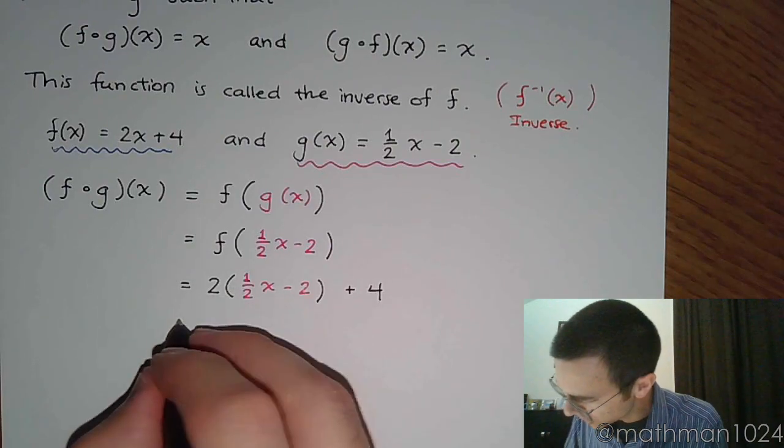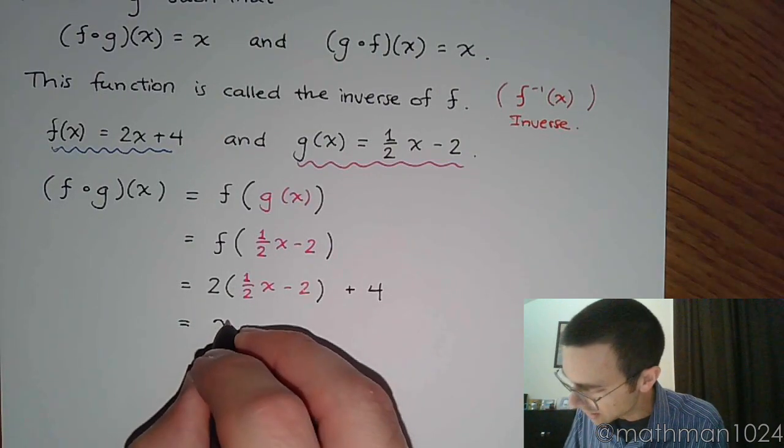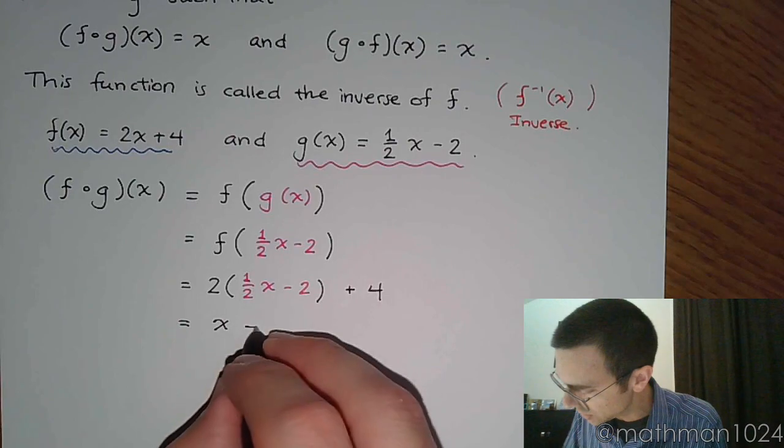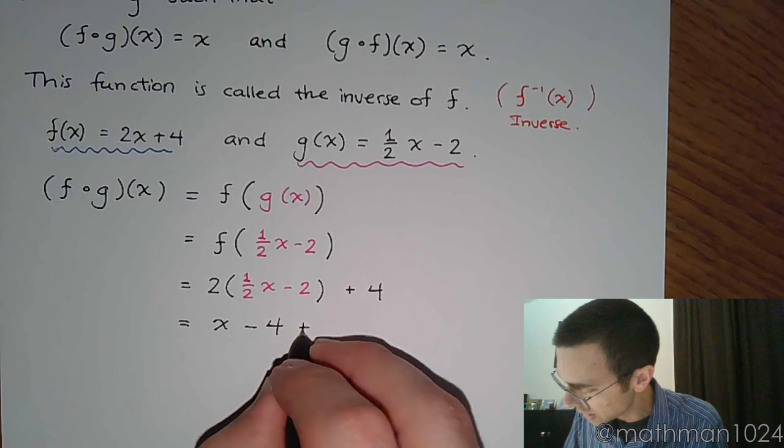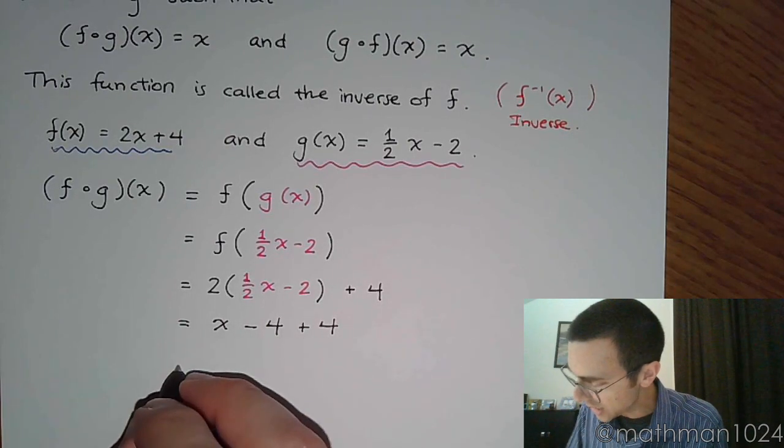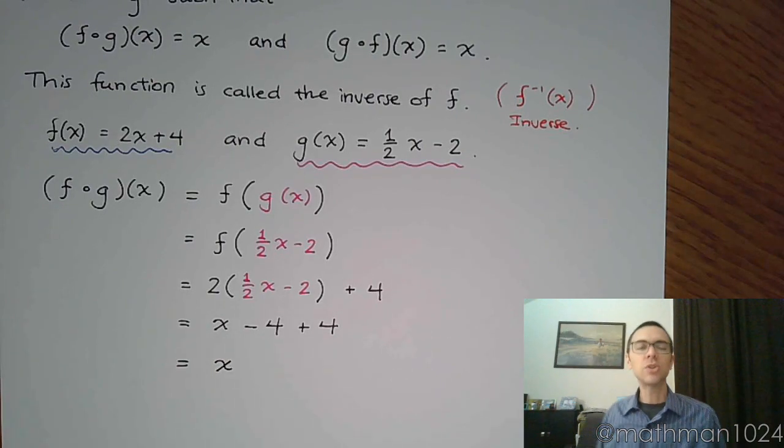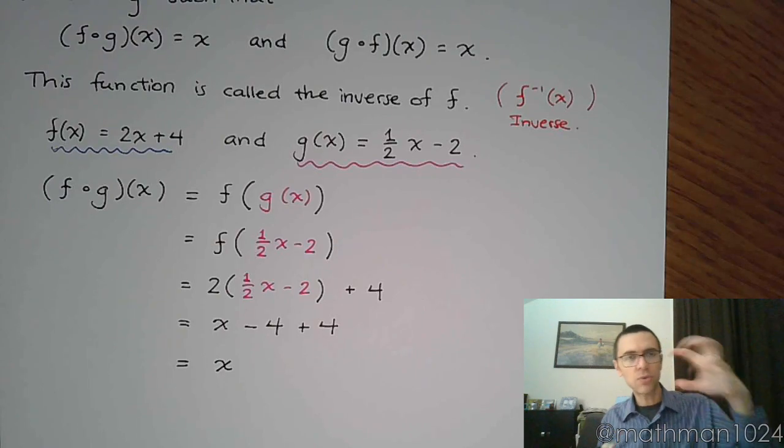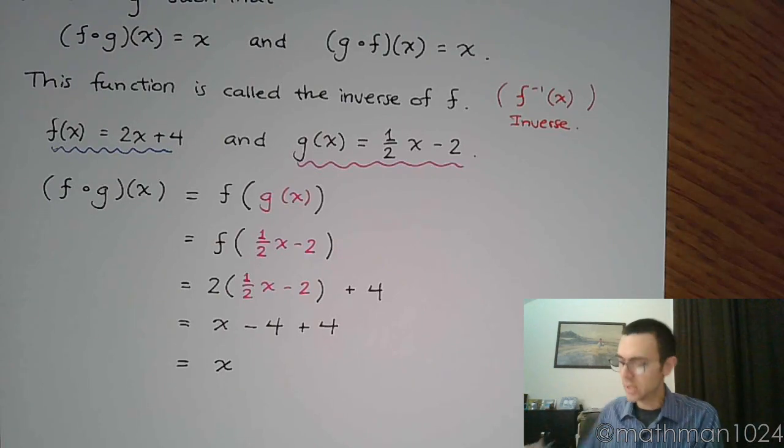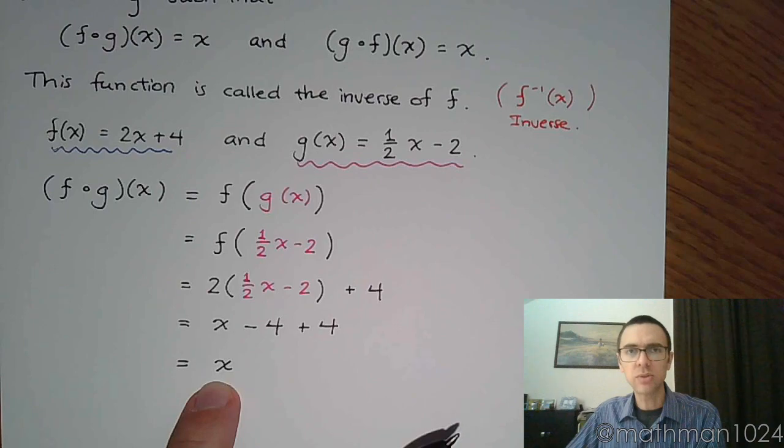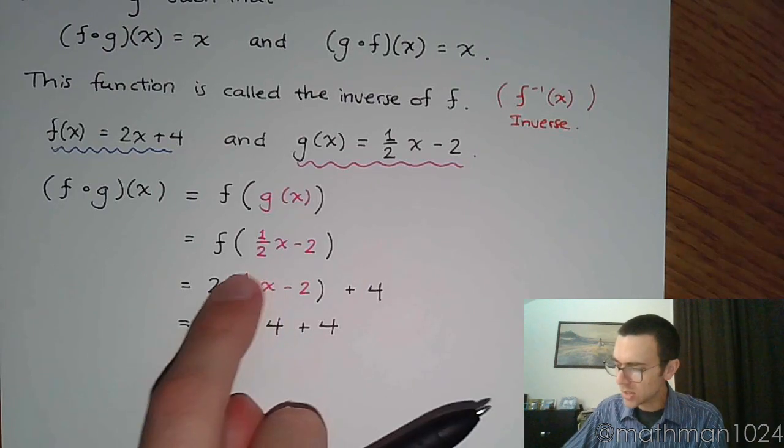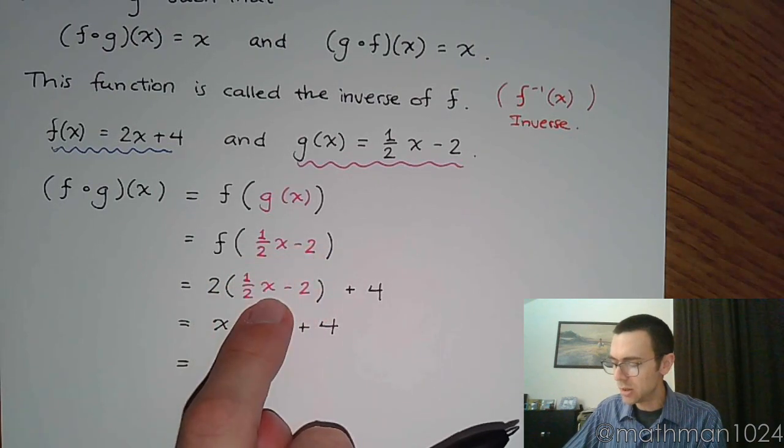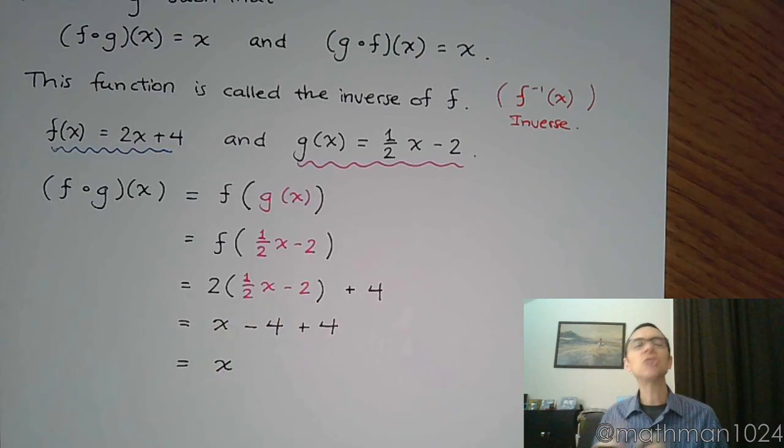When I distribute the 2, I get x, 2 times negative 2 is negative 4, and then plus 4, and this equals x. So doing function composition this way, where I'm taking x going through g and then going through f, you get back x. So x gets changed by going into g, but then f will undo everything.